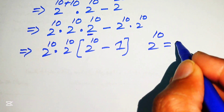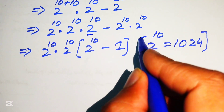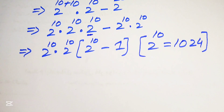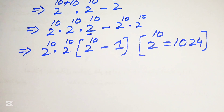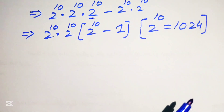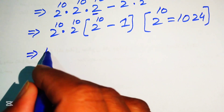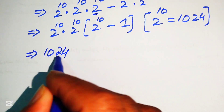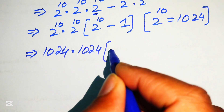Now, 2 to the power of 10 equals 1024. You can easily get this value — see my playlist Math Lumped where I explain how to find 2 to the power of 10 without using a calculator. We now replace this value, so it is written as 1024 multiplied by 1024 minus 1.